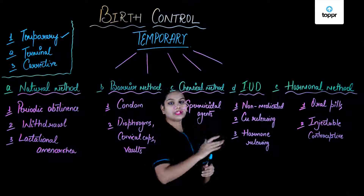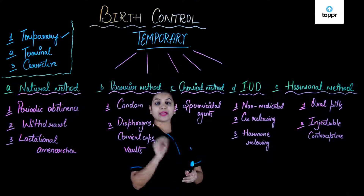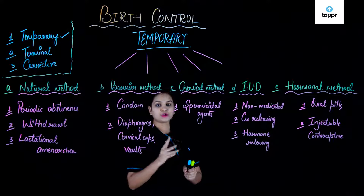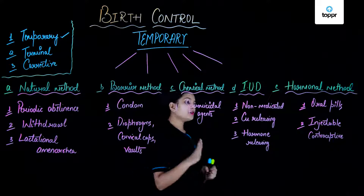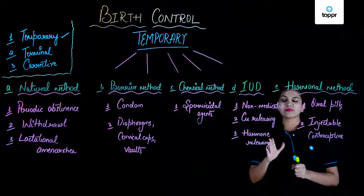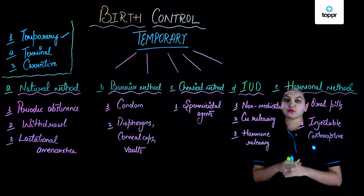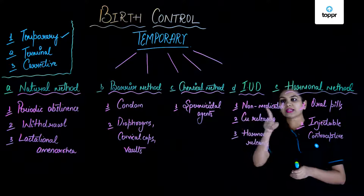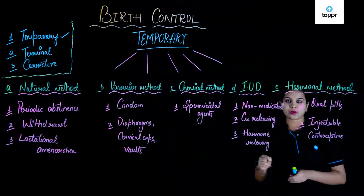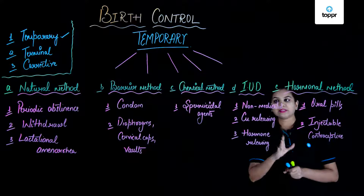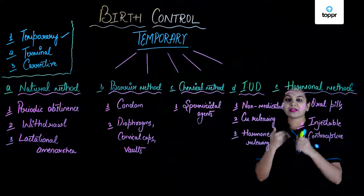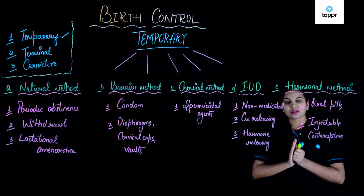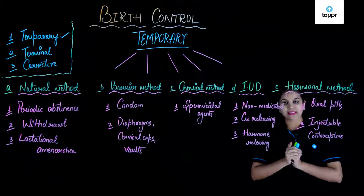Next we come to IUD, which stands for intrauterine devices. As the name suggests, they are placed in the uterus of a female to prevent pregnancy in different ways. The first type is the non-medicated IUD, which basically enhances the phagocytosis of uterine cells towards the sperm, so the sperms get killed with the help of uterine cells.